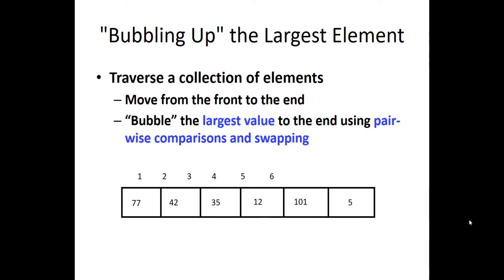Let's see with an example. This series consists of the elements 77, 42, 35, 12, 101, and 5. In programming terms, we have the first element as i and the second element as j. The element i goes from the first element to the n-minus-one element, and j goes from the second element to the nth element. In every step we repeat the same step: comparing i and j.